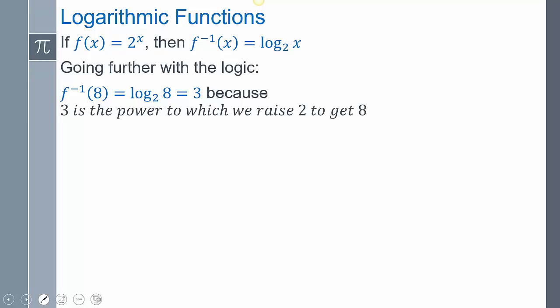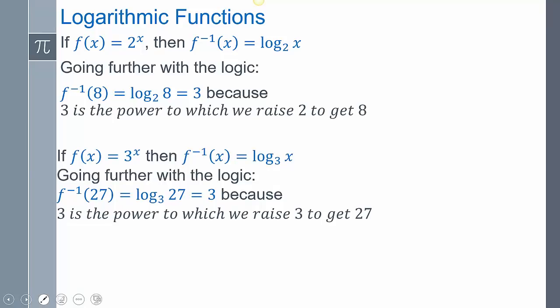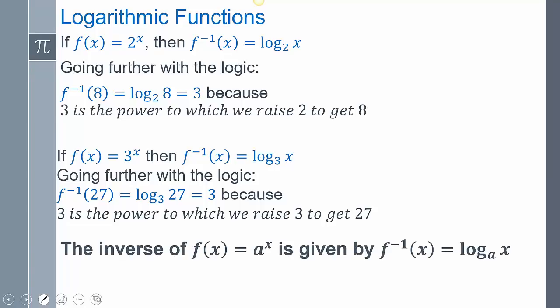If my function is 2 to the X, then the inverse would be log base 2 of X. For example, the inverse evaluated at 8 means plugging 8 in: log base 2 of 8 equals 3, because 3 is the power to which we raise 2 to get 8 — since 2 to the third equals 8. If F of X equals 3 to the X, then the inverse is log base 3 of X, and log base 3 of 27 equals 3 because 3 is the power to which you raise 3 to get 27.